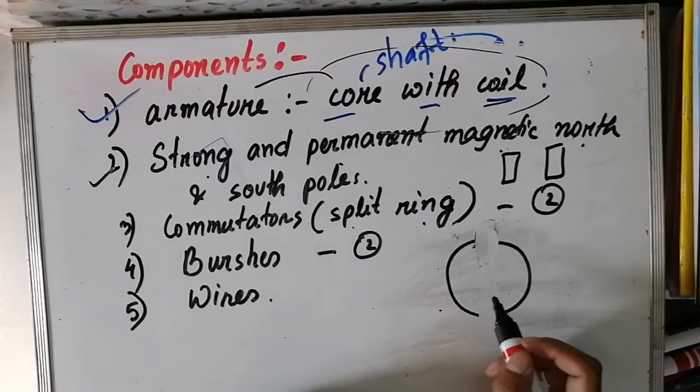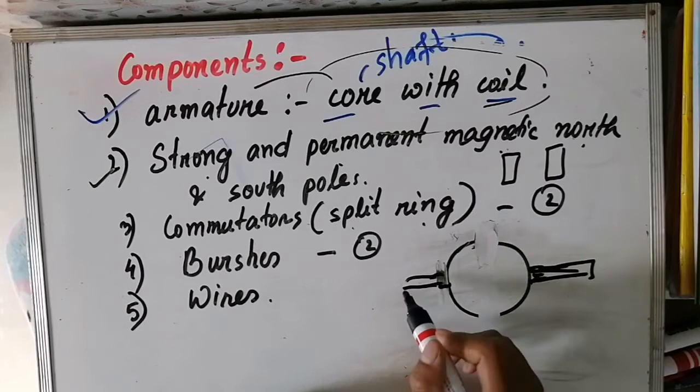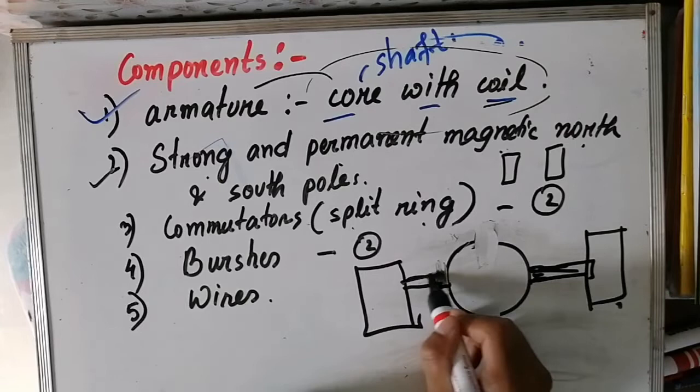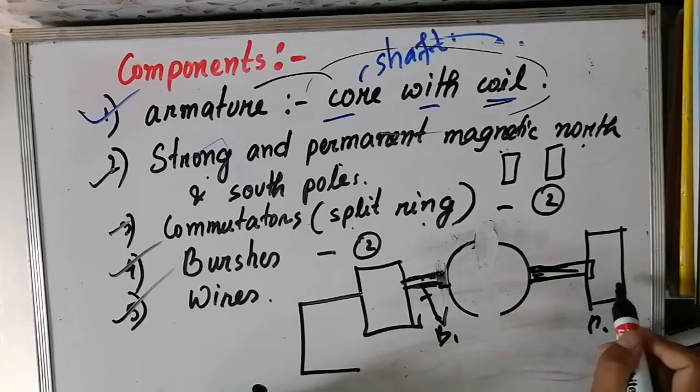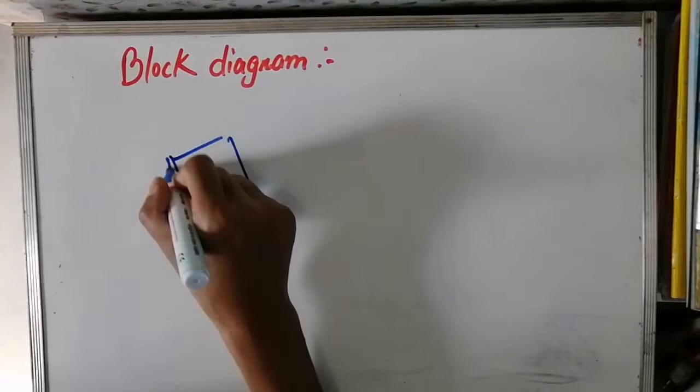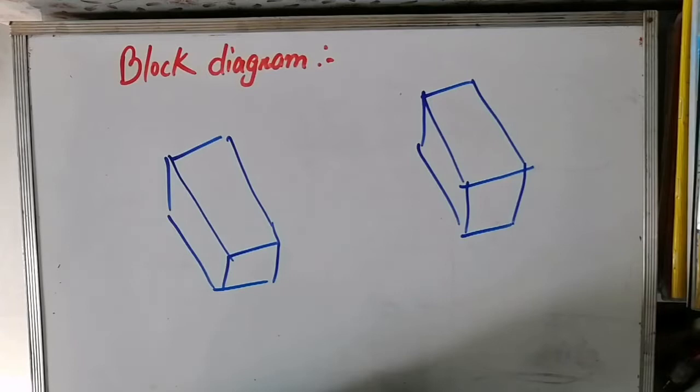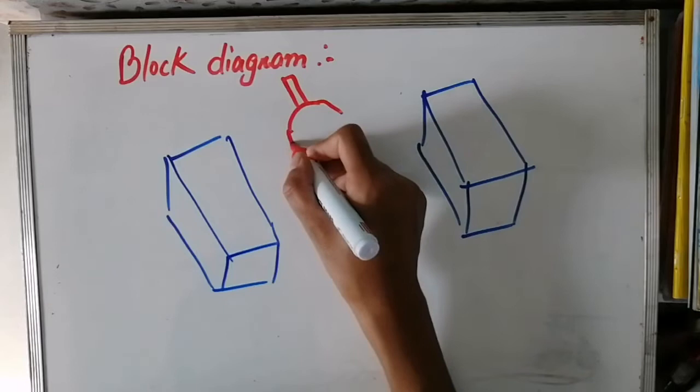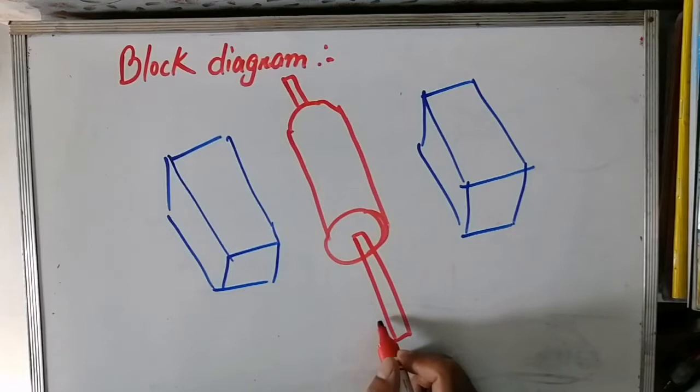The next component is the brush. There are two brushes, B1 and B2. The brushes bring power from the battery. The brushes are made of carbon and touch the split ring commutator.